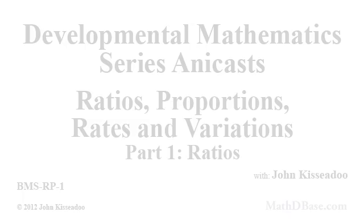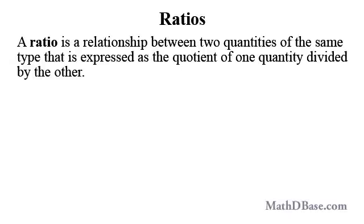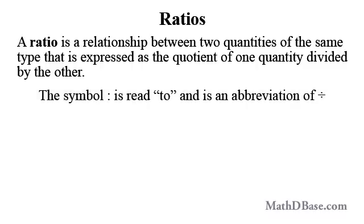A ratio is a relationship between two quantities of the same type that is expressed as a quotient of one quantity divided by the other. When a ratio is expressed as a fraction, the numerator is called the antecedent and the denominator the consequent. The colon symbol is used to indicate a ratio and is an abbreviation of the division symbol.